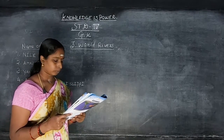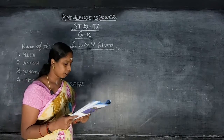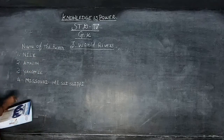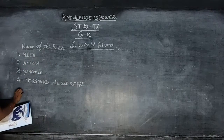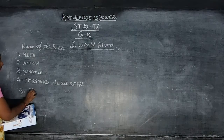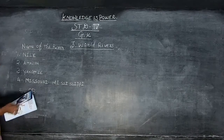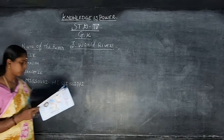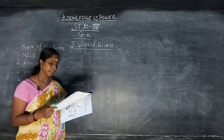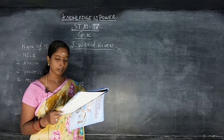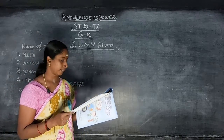Fifth one: Ob River. Continent: Russia. Length: 5,568 kilometers.